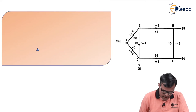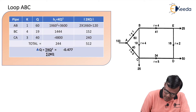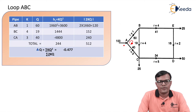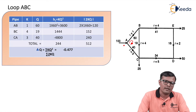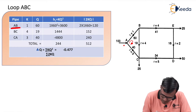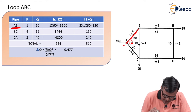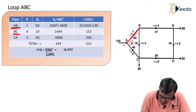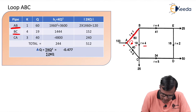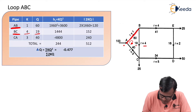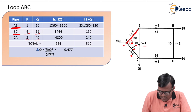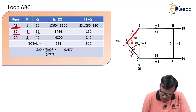Let us solve the problem by considering the first loop, that is loop A-B-C. We consider the clockwise direction as the reference direction. If discharges are in the positive (clockwise) direction we consider them positive, and if opposite, negative. For pipe A-B, the value of R is 1 and the value of Q is 60. For pipe B-C, the value is 4 and 19. For pipe C-A, the value is 3 and 40. All three flows form a loop in the clockwise manner, so all are considered positive.